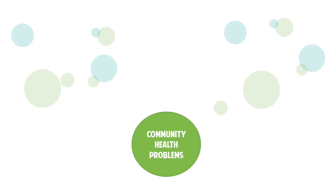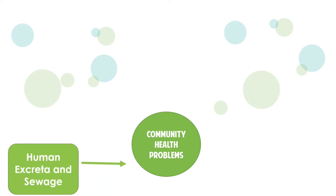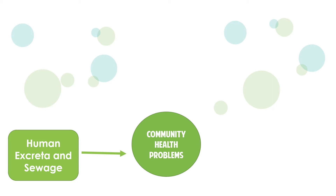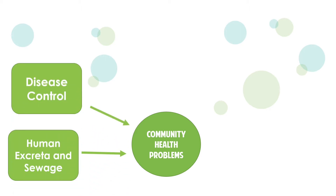Let's go first to the community health problems, and I am sure that you are already familiar with this. First, human excreta and sewage. Human waste or human excreta refers to the waste products of the human digestive system and the human metabolism, namely urine and feces. Second, we have disease control. This refers to diseases spread in the community through contact, droplet, and airborne.